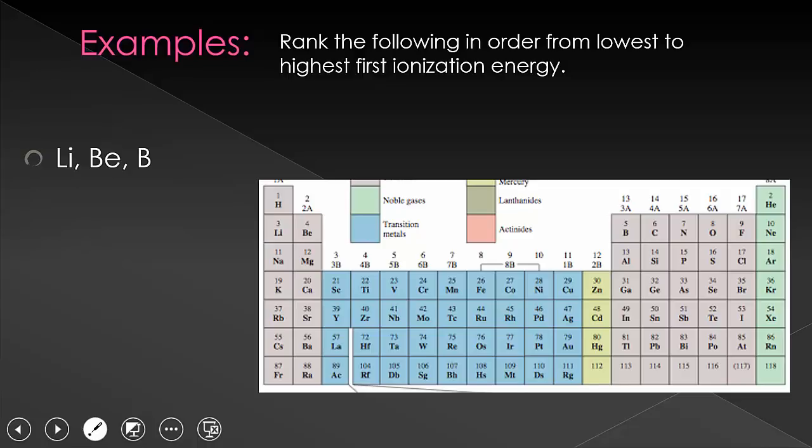Because beryllium has a full S shell, its ionization energy is going to be higher than boron. It's already stable, where boron, by losing that electron, actually gets a more stable electron configuration. So the ordering here will be lithium, and then boron, and then beryllium.